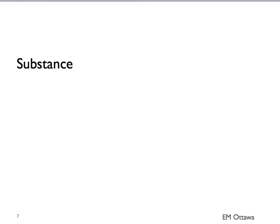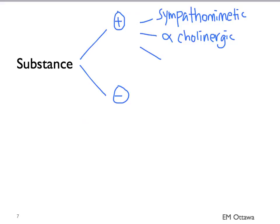Another big category is substance use, either from using a substance or withdrawal. Substances that cause agitation can include sympathomimetics, anticholinergics, or serotonin drugs. Withdrawal from substances such as alcohol and opioids can produce agitation.